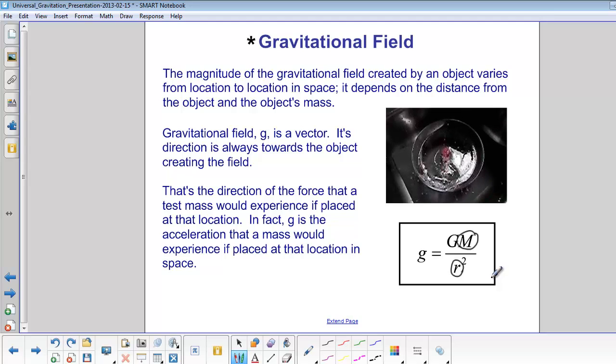Gravitational field is also a vector, which means it has a direction. And its direction is always towards the object creating the field. That's the same as the direction of the force a test mass would experience if placed in that location. In fact, g is the acceleration a mass would experience if placed in that location in space. It is the acceleration due to gravity.